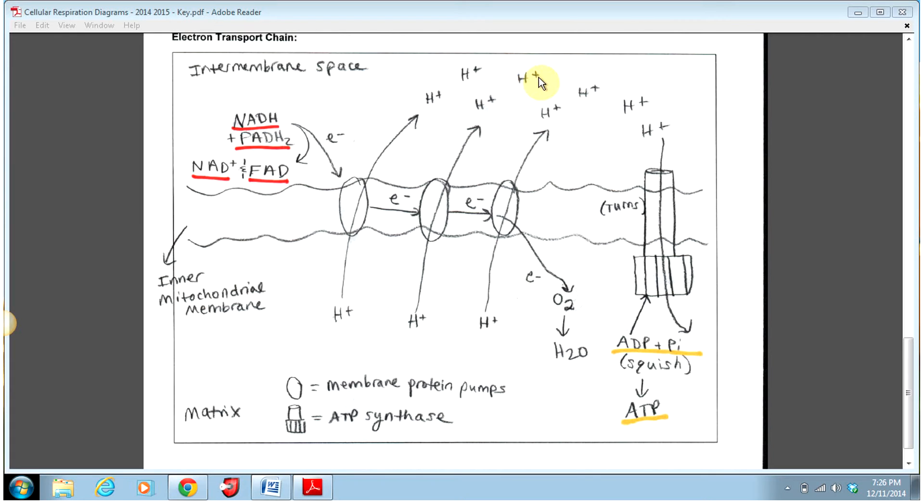Now H plus wants to flow back across the membrane and diffuse from the high concentration that we've just built up to a low concentration in the matrix. The only way that it can flow back across the membrane and diffuse is through this protein, which is called ATP synthase. We have a little key to tell us what that is down here.